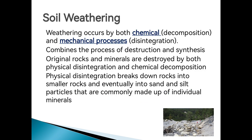Soil weathering occurs by both chemical and mechanical processes. It combines the process of destruction and synthesis — some particles are destroyed, and others are newly formed. The original rocks and minerals are destroyed by both physical disintegration and chemical decomposition. Physical disintegration breaks down rocks into smaller rocks and eventually into sand and silt particles. This process did not happen 10, 100, or even 1,000 years ago — it takes time, and can take more than 1,000 years depending upon the factors in the area.